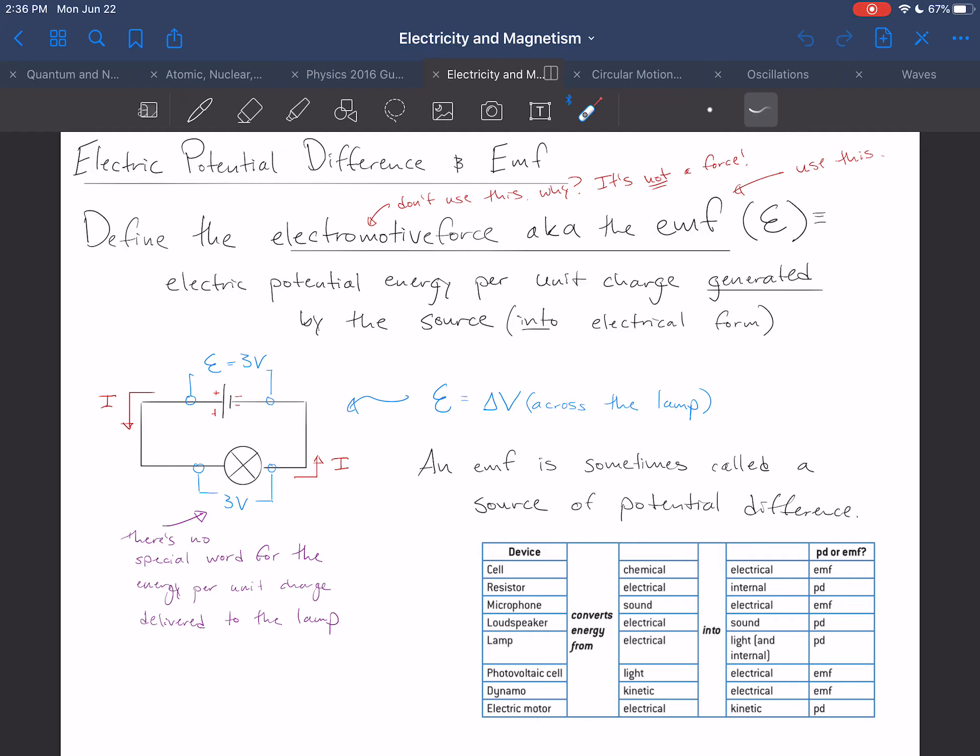This three volts is going to be the same number as this three volts. They happen to be the same. But the concept is different. The EMF is a concept we use to refer to sort of sources of electrical energy. The electric potential energy per unit charge generated by the source.